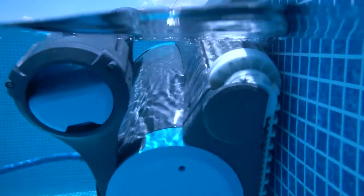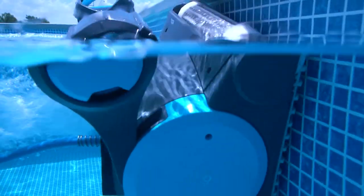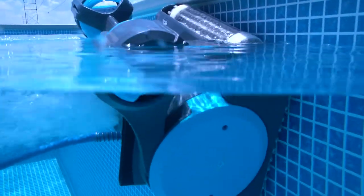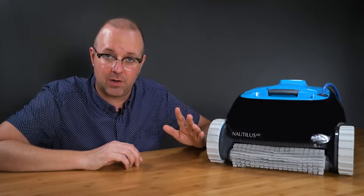A robotic pool cleaner like the Dolphin Premier is a waterline cleaning pro. It's the best waterline cleaner I've ever seen. Look as my Premier scrubs away the waterline. The Nautilus CC will simply bounce off the waterline if it reaches it at all.